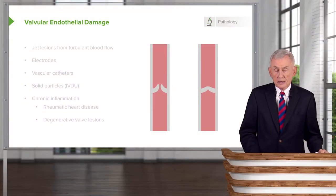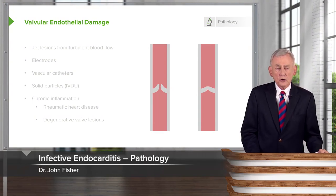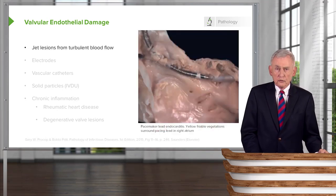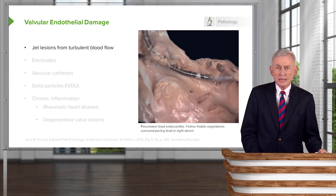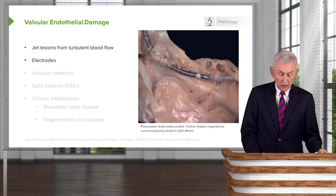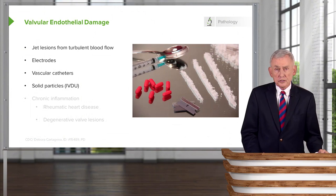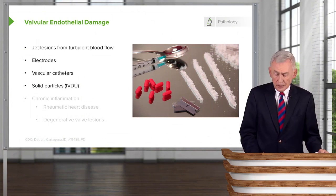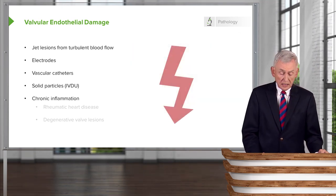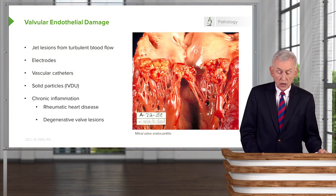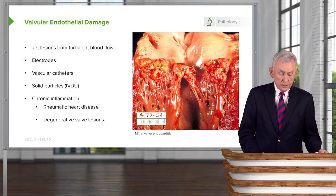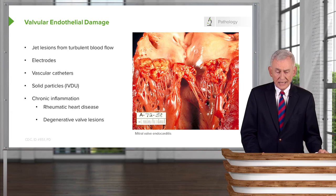Let's turn to the pathogenesis and see how endocarditis develops in the first place. Abnormal valves produce turbulent blood flow, and turbulent blood flow causes injury to the endothelium. The endothelium can be further injured by electrodes placed in the heart or vascular catheters. Intravenous drug use brings the injection of solid particles from drug adulterants. Chronic inflammation from rheumatic heart disease or degenerative valve lesions also produces damaged valves with turbulence. So turbulent blood flow is one of the keys to endocarditis.